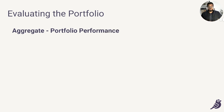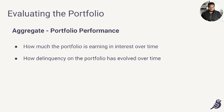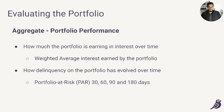To answer the question of portfolio performance over time, we're looking to understand one, how much the portfolio is making, and two, how the delinquency on the portfolio has evolved over time. From the first point, we're typically looking to understand the weighted average interest earned by the portfolio over time. And for the second point, we want to see how the portfolio at risk has fared over time — how has the proportion of the portfolio that is at least 30, 60, 90, and 100 days overdue changed?